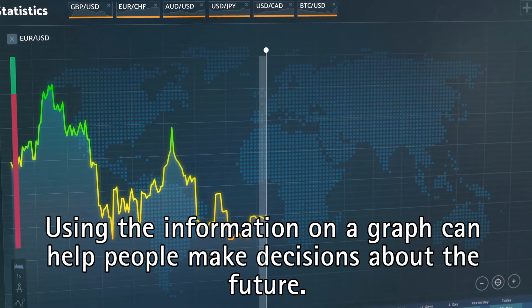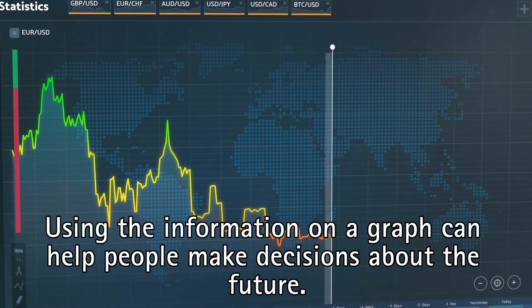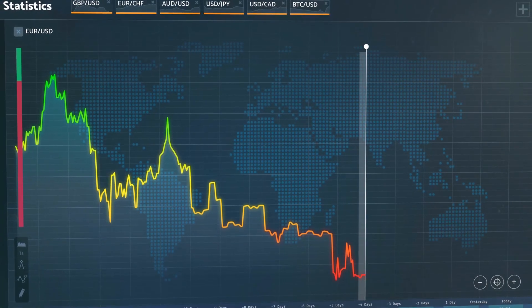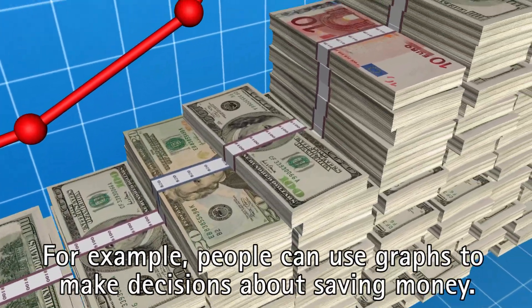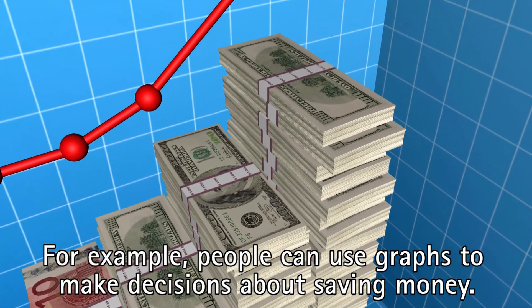Using the information on a graph can help people make decisions about the future. For example, people can use graphs to make decisions about saving money.